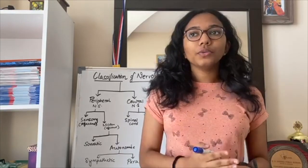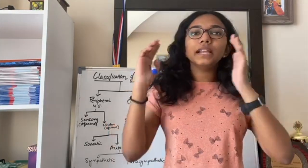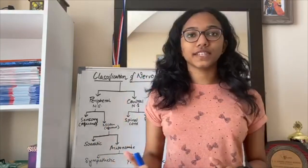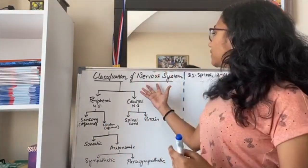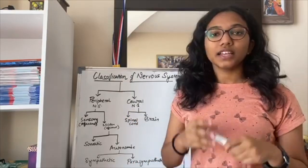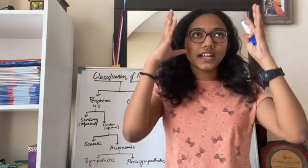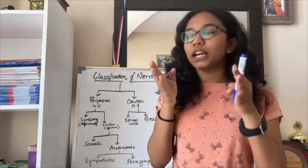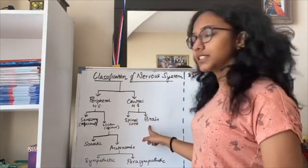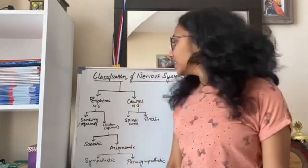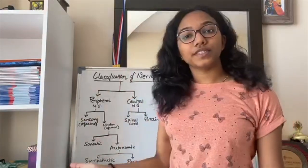Along with the brain, there are millions of other things which help in the proper functioning of the nervous system. The nervous system is classified into central and peripheral. The central nervous system — just imagine it as the center of your body — consists of the brain and the spinal cord. The peripheral nervous system spreads from the brain and spinal cord towards the rest of the body, which includes your different nerves.